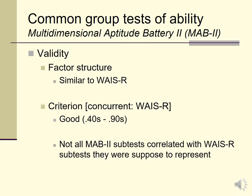Nonetheless, the MAB-2 was a creation of its time — a test designed to mimic the Wechsler Adult Intelligence Scale but be suitable for group format administration. There's likely a current version designed to resemble the WAIS-4, which is the current version of the Wechsler adult intelligence scale.